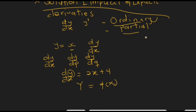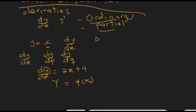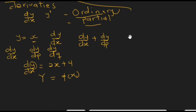That is an example of an ordinary differential equation: dy/dx = 2x + 4. For the partial differential equation, you can have ∂y/∂x + ∂y/∂p = 2x + 5p. In such an equation we have more than one independent variable, hence it is a partial differential equation. These are some of the examples of differential equations you will be encountering.